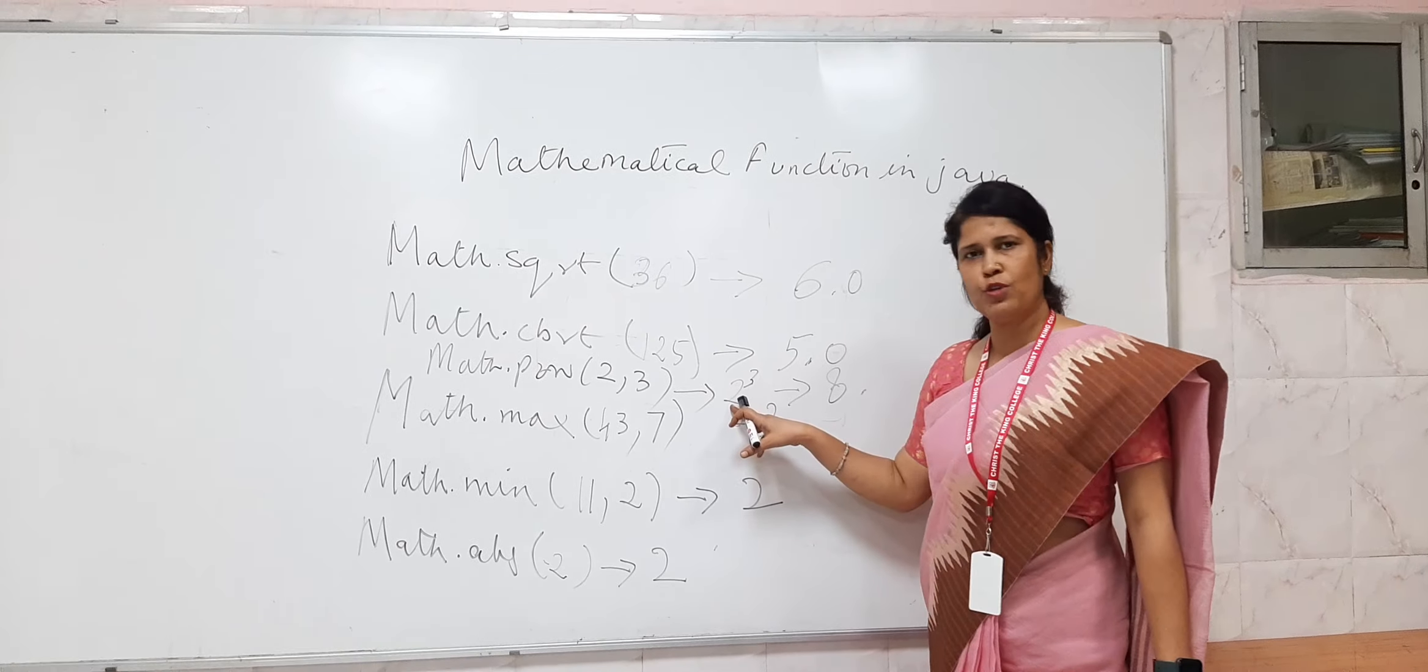Same way we have Math.min function which will return minimum value among the two variables. We have 11 and 2. So minimum value is 2. It will return 2.